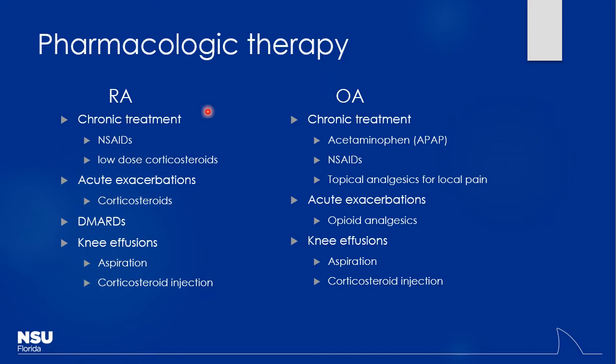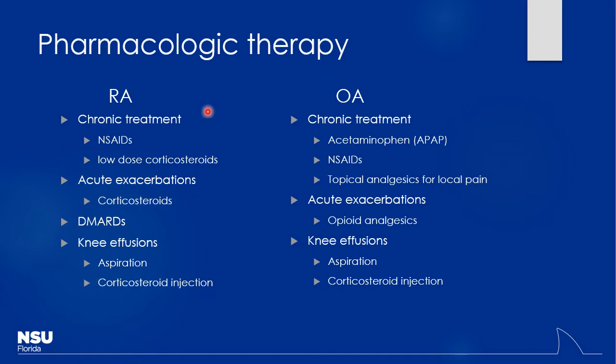Looking at pharmacologic therapy, comparing these two: for chronic treatment, especially for pain control, NSAIDs are a big component. NSAIDs can also play a role in osteoarthritis. What differentiates acetaminophen from NSAIDs? Acetaminophen is more of an antipyretic and analgesic but is it anti-inflammatory? Not really. That's why you don't really see acetaminophen used in RA — it deals with pain centrally but doesn't deal with inflammation peripherally. That's why you see it in OA but not RA.